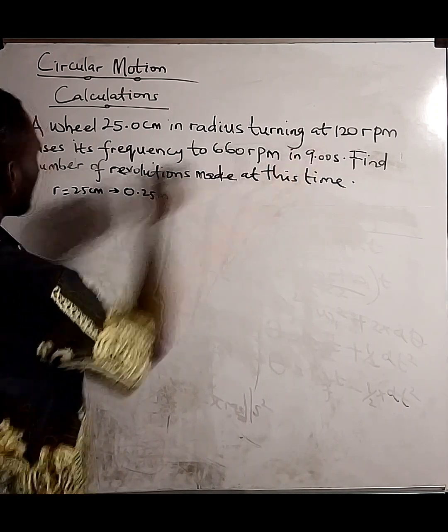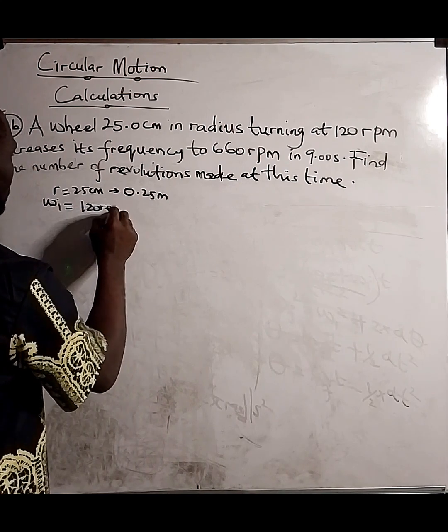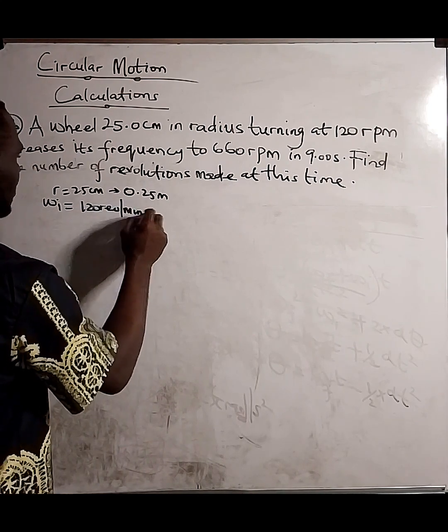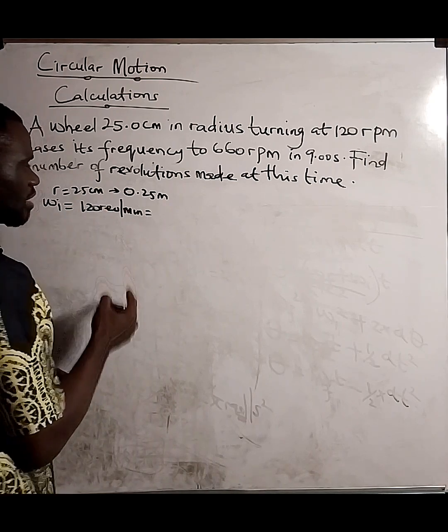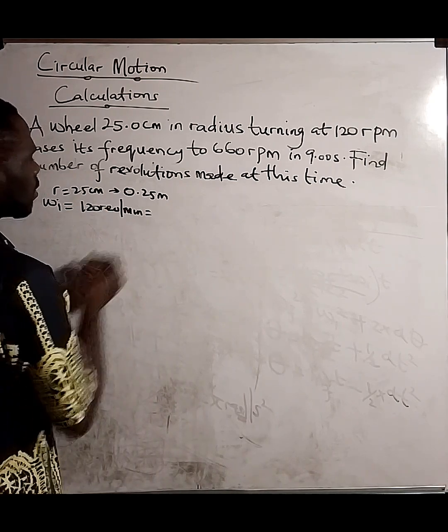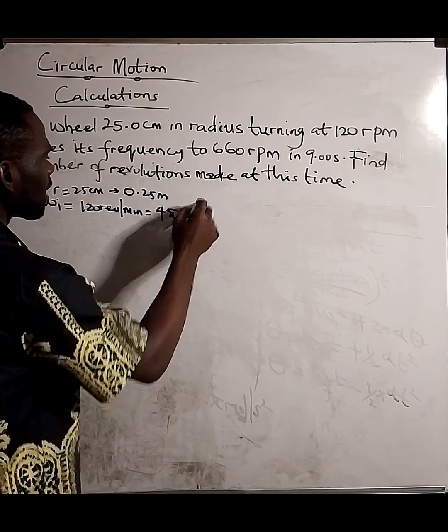So, here we have initial angular speed, which is 120 rpm. When we convert this to rad per second, don't forget that one revolution is 2 pi rad. So, times it by 2 pi divided by 60, we end up getting 4 pi rad per second.